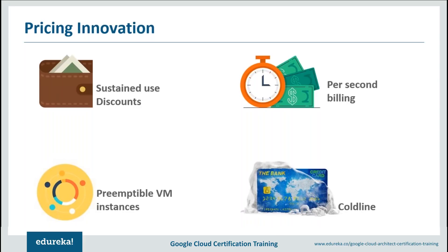Coldline: if you've ever worried about archive storage, you know about problems like slow transfer rates. Coldline is very different — it provides services at the cost of slow services already in the market, meaning it is very cheap, but the services it provides are very fast. These are called coldline storage services, and they let you perform all operations at a much faster pace.